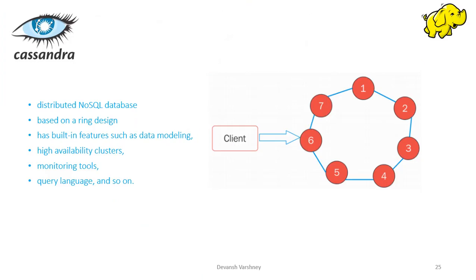In the next section we will see what unified common services are, such as YARN resource management, Apache Oozie, Apache Sentry, and so on.